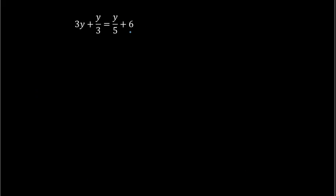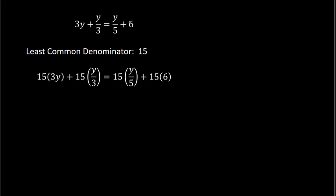Here is another example. Once again, we need a common denominator. We have 3 and 5, and the least common denominator would be 15. So I multiply everything by 15. For the first term, 15 times 3y is 45y. Then the 15 and the 3 can divide to give me 5, so we have plus 5 times y. On the right, 15 divided by 5 gives me 3 over 1, so we have 3 times y.